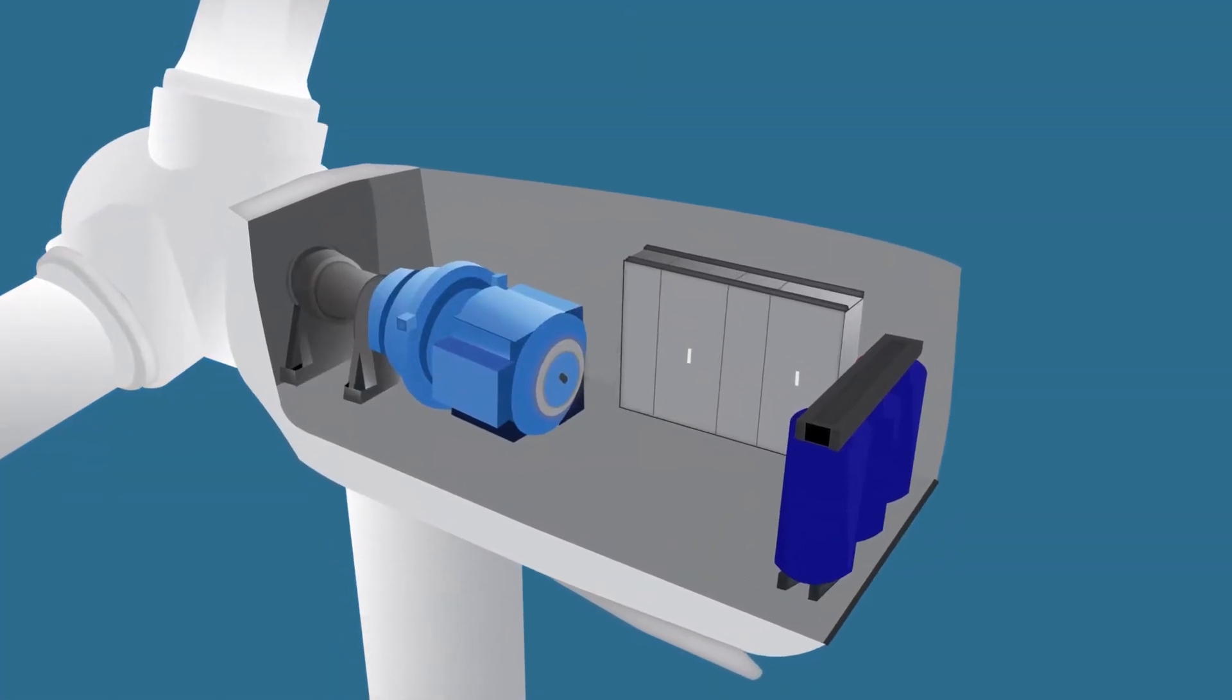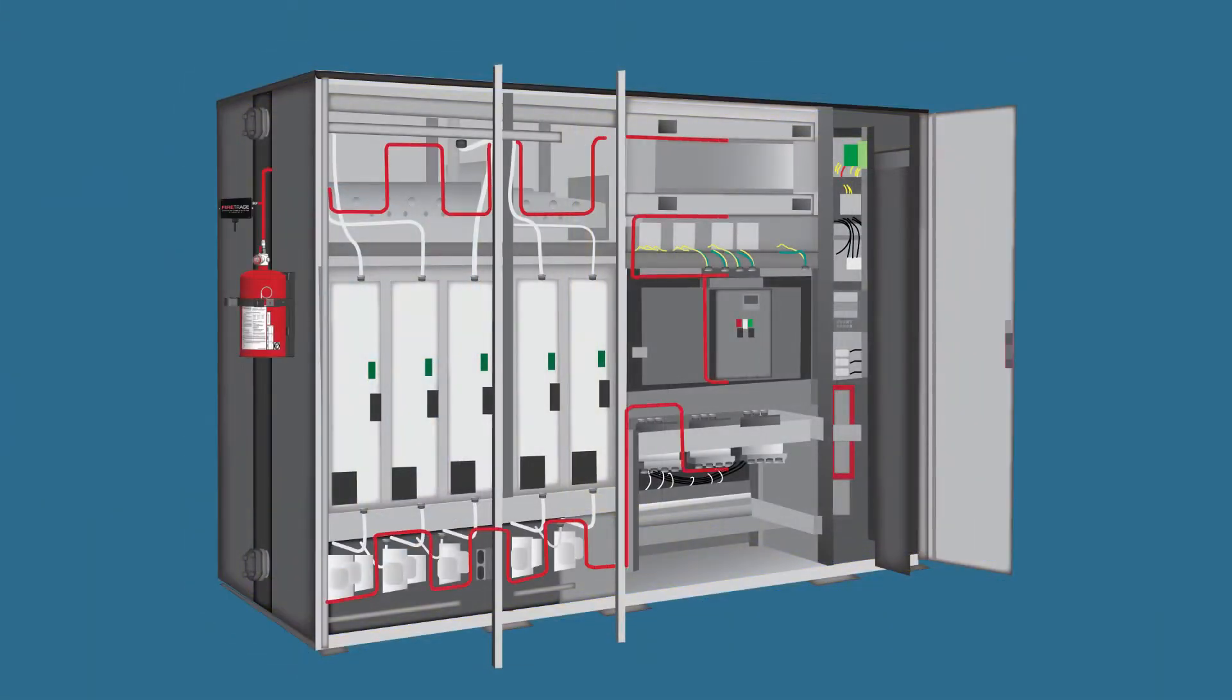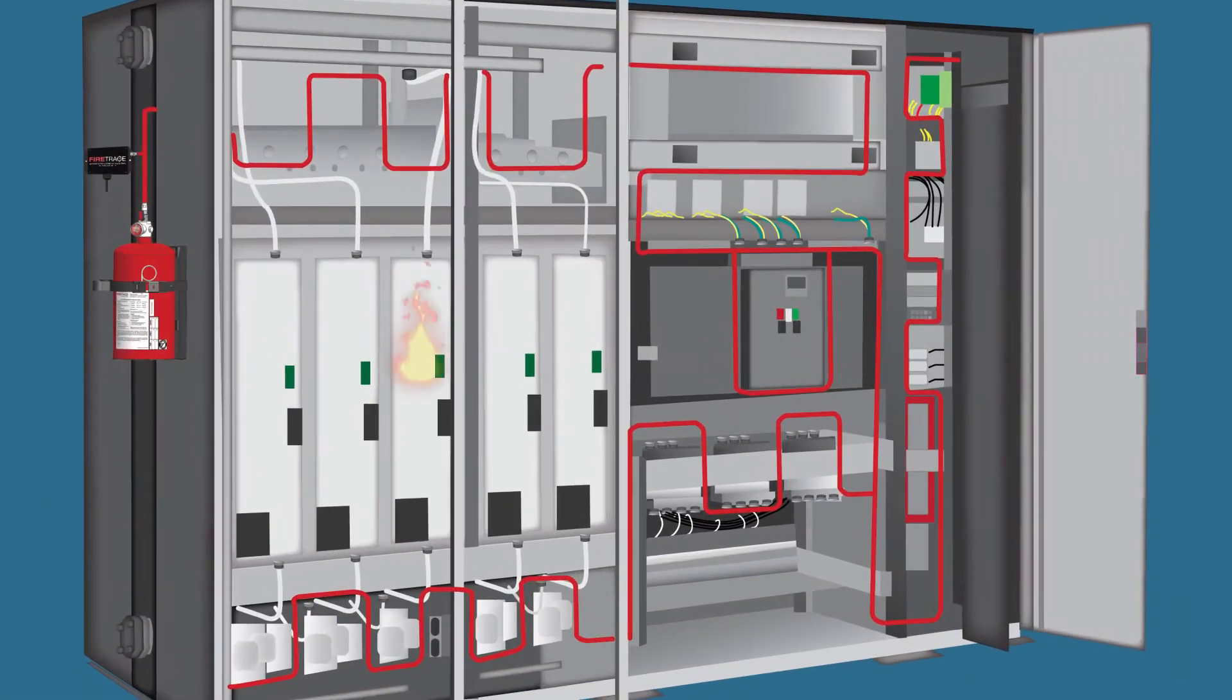The FireTrace detection tubing is installed throughout the area you are protecting. If fire or high ambient heat is detected, the detection tubing bursts at the source and releases the suppression agent directly at the fire.